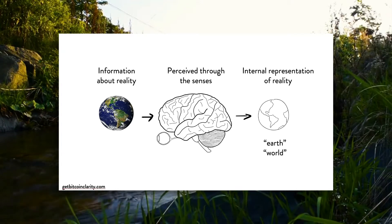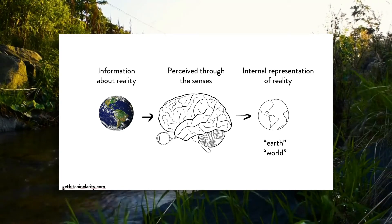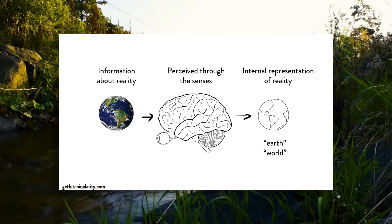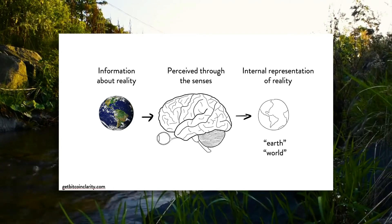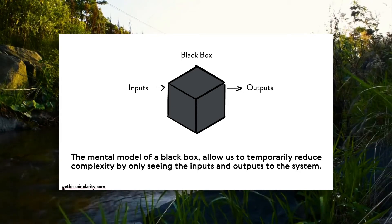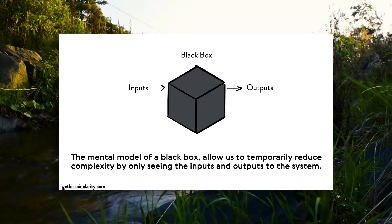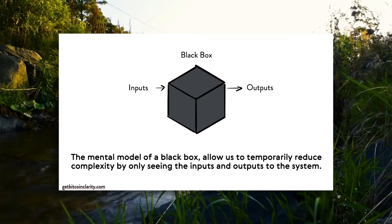Taking this fundamental understanding that you are limited in your ability to perceive the world through your senses, one truth that percolates out of that is that there is vastly more information about reality than you could ever interpret. One of the ways engineers have thought about this is to create the concept of a black box — a mental model we can use to temporarily reduce complexity by focusing only on inputs and outputs to the system. You can apply this idea of just looking at inputs and outputs to any system.